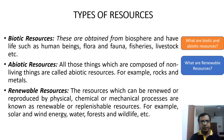The types of resources — what are biotic and abiotic resources? Biotic resources are obtained from the biosphere and have life, such as human beings, flora and fauna, fisheries, livestock etc. Abiotic resources are those things which are composed of non-living things. Examples of abiotic resources are rocks and metals.